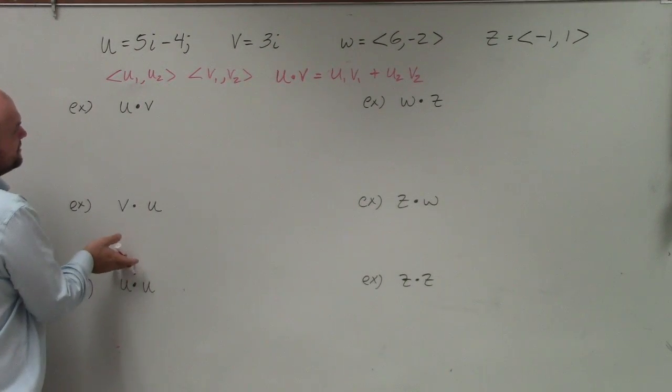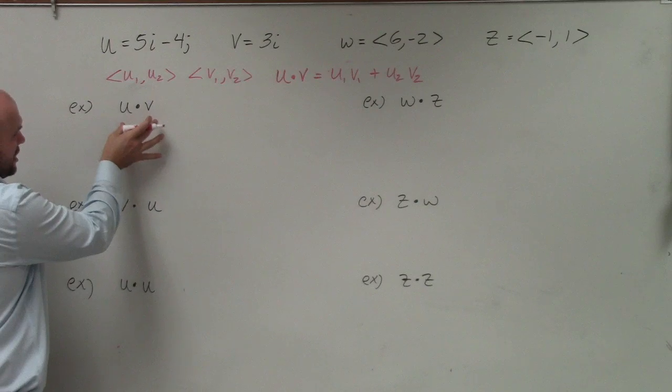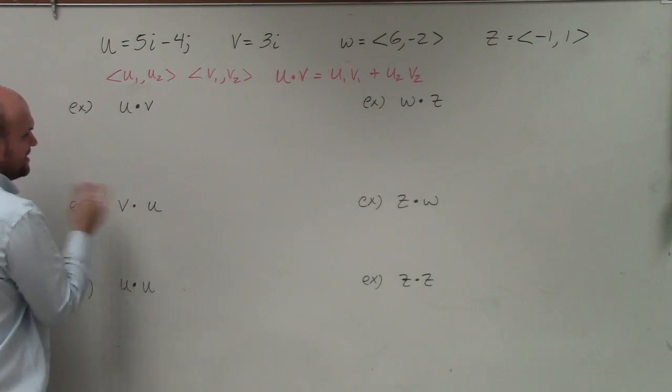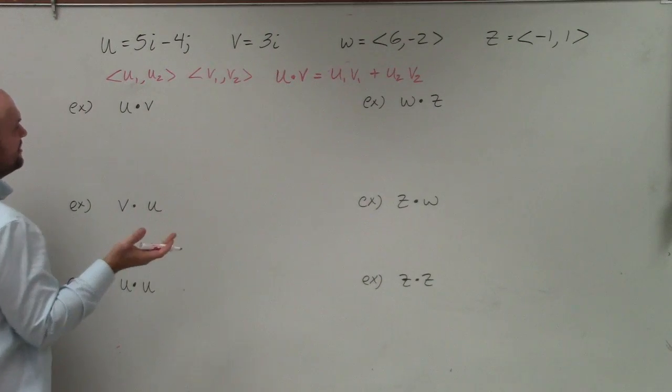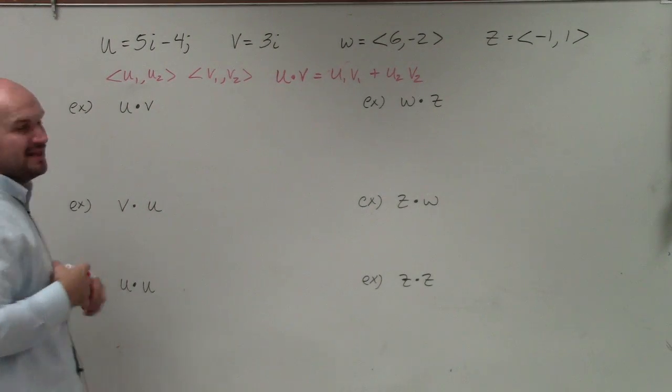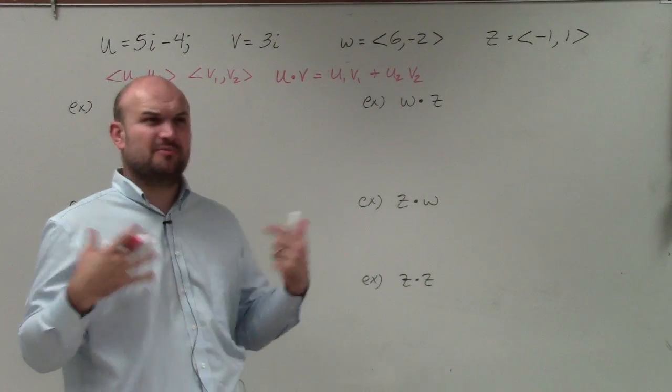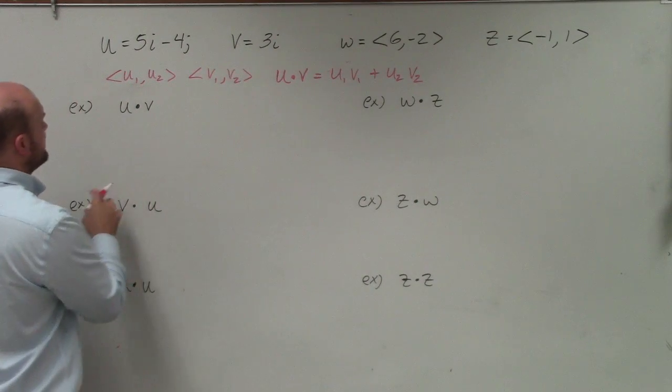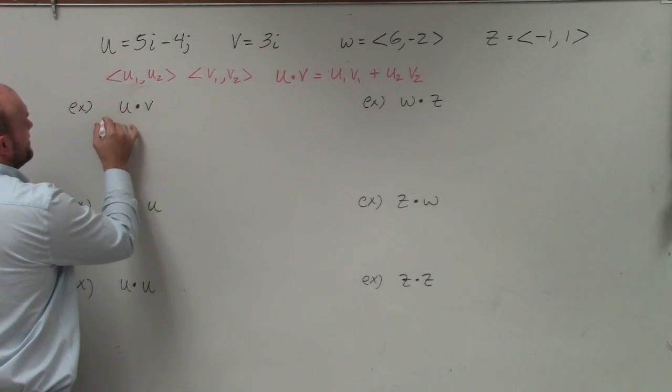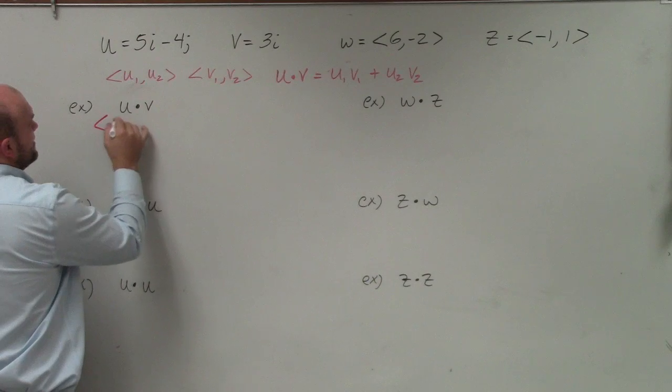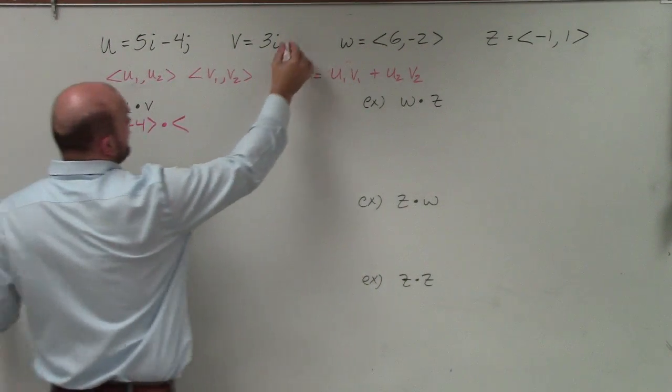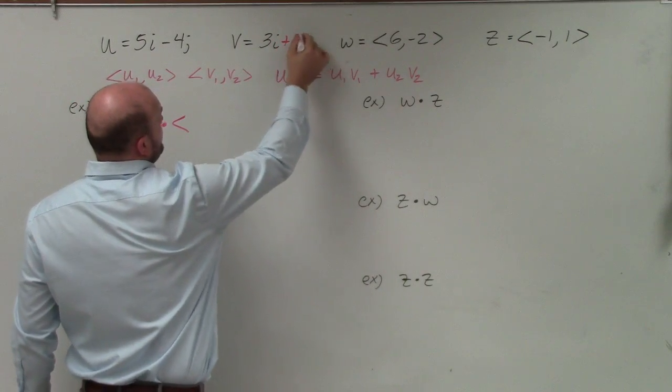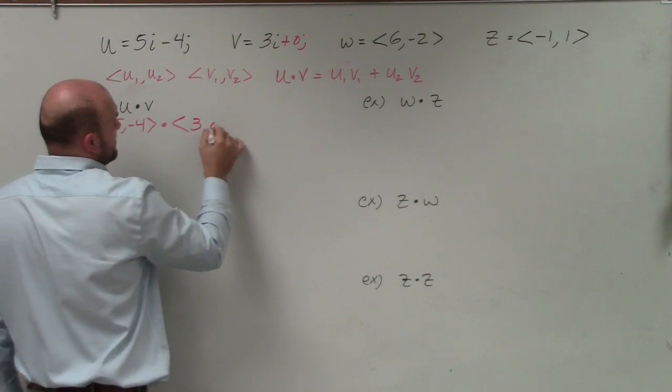So in here I have basically our two vectors labeled as u and v. And you can see that they're written as linear combinations. So maybe one of the first things I might want to do is rewrite them in component form because I always just kind of prefer component form rather than linear combinations. So if I was going to write them in component form it would look something like this: 5 comma negative 4 dot i and then you could also say that is 0 j. So that's 3 comma 0.